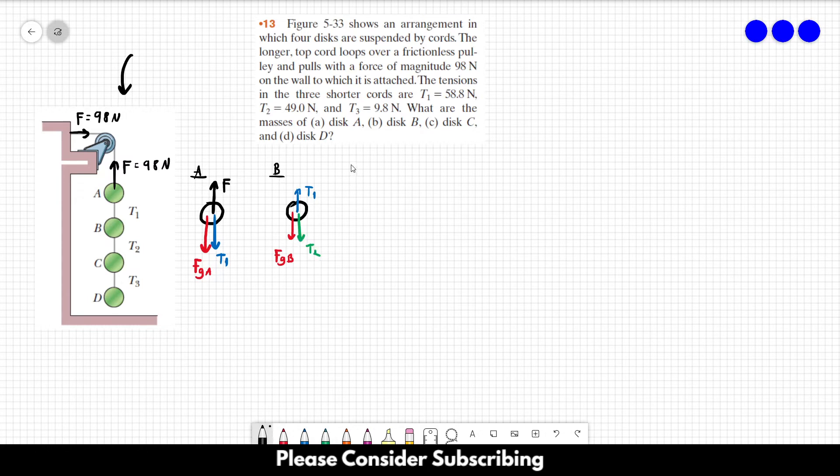For disc C, we have T2 pointing upwards, we have T3 pointing downwards, and we have gravity downwards. And for disc D, we have T3 pointing upwards.